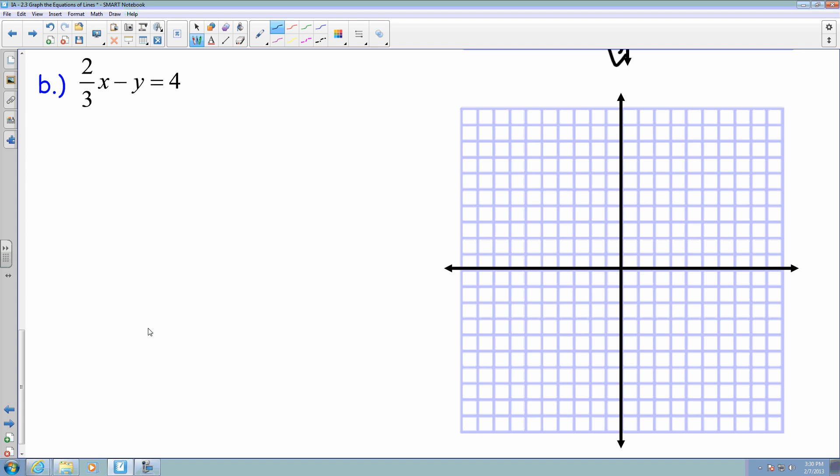For B, this is in standard form, so we don't have to rewrite the equation. We can just implement our intercepts and then plot those points. So I'm going to try to find the x intercept by substituting in y for 0. So now I've got 2 thirds x equals 4. So to get rid of this 2 thirds, I'm going to multiply it by its reciprocal, so that cancels, and multiply it by 3 halves on the other side. So my x equals 6.